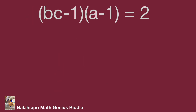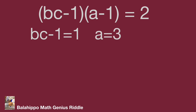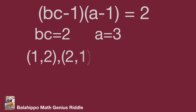Find the values one after another. In the case of (bc plus 1) times (a plus 1) equals 1 times 2: (bc plus 1) equals 1 and (a plus 1) equals 2, so a equals 3 — wait, (a plus 1) equals 2 gives a equals 1, and bc plus 1 equals 1 gives bc equals 0. Actually: bc equals 2. Since bc are positive integers, bc could be (1, 2) or (2, 1), giving two number groups for abc from these conditions.